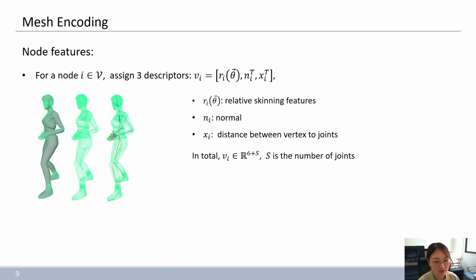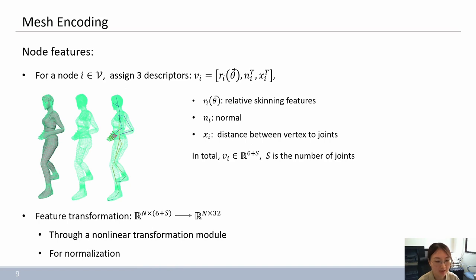Next, the features of each node are transformed through a nonlinear feature transformation module. The module consists of linear layers followed by nonlinear activation and normalization.